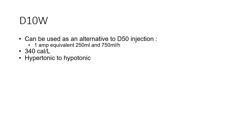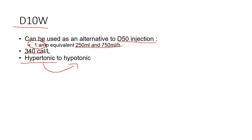D10W has a very high sugar concentration — about 340 calories of energy per liter. It's commonly used when D50 injections aren't available: you can run a drip of D10W at around 250 mils at 750 an hour to make the equivalent of about one amp of D50 for hypoglycemic patients. It's a hypertonic solution that eventually becomes hypotonic as the D10 is metabolized, leaving just water.